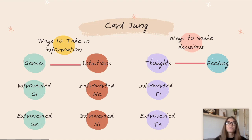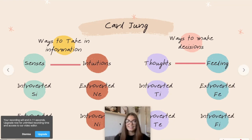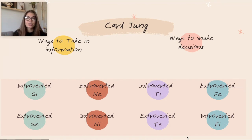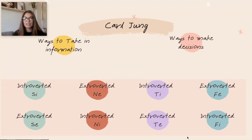Extroverted thinkers focus on the outer world's thoughts — what the group thinks and how things have worked according to the group. For feelings, you could be oriented toward the group's feelings — extroverted feeling — or toward your own inner personal feelings — introverted feeling. When you combine sensing, intuition, thinking, and feeling with their introverted and extroverted variants, you get eight cognitive functions: four ways to take in information and four ways to make decisions.